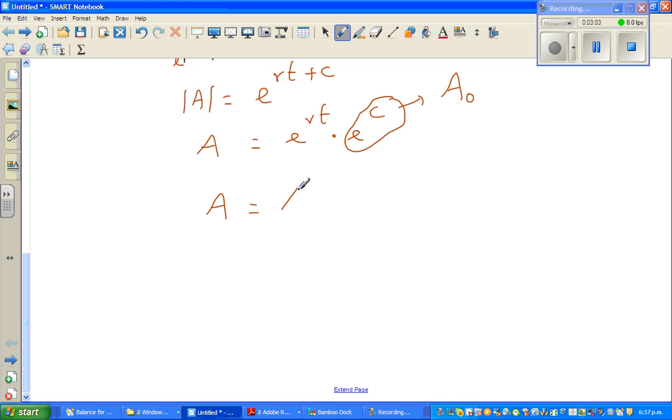So I can say A, which is the amount that you get after a particular time, is A_0 times e^(rt). Now A_0 in this case is the initial amount deposited, or the principal deposited.